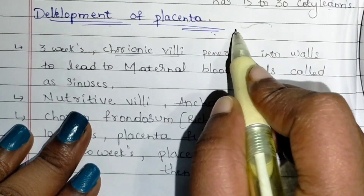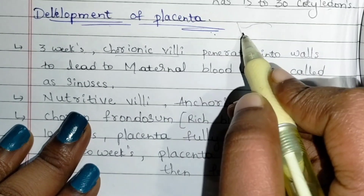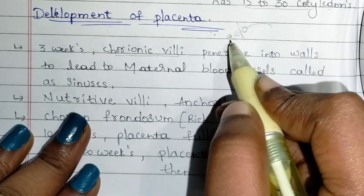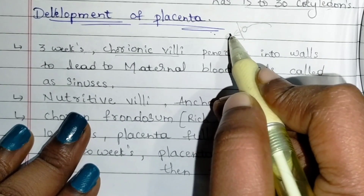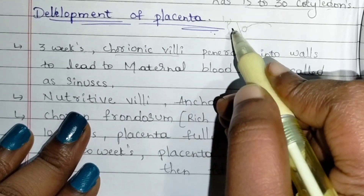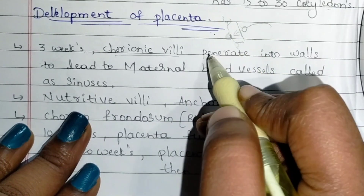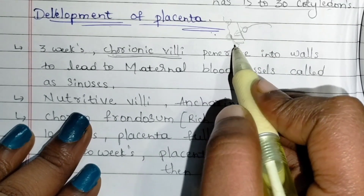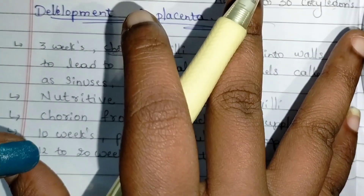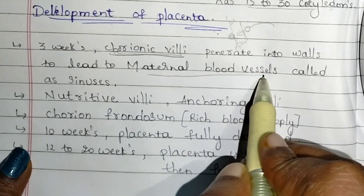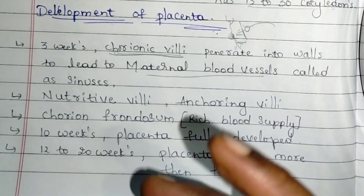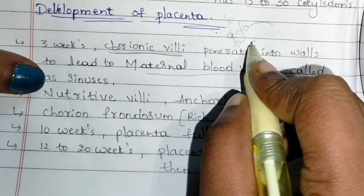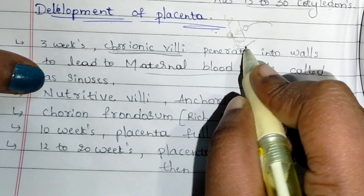At the time of implantation, the ovum is embedded into the uterus wall. After entering, it needs blood, so it starts spreading its connections in the form of chorionic villi. These chorionic villi start spreading to find the maternal blood vessels because they need blood to survive.